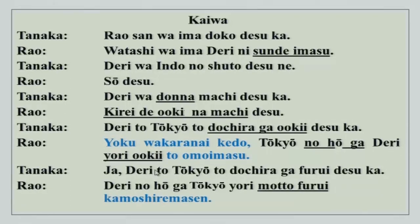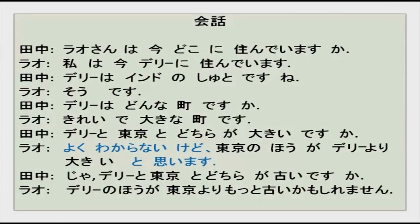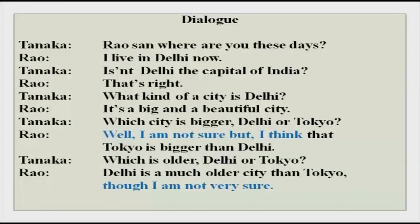You could also add sou desu ne when you actually want some time to think. Kamoshiremasen and to omoimasu are what we are going to do today, so please concentrate on those two. This dialogue is in your script. There are a few kanjis from here that we will do — for example, machi, Tokyo, and omoimasu. There is also a translation in English, so you can go over it.